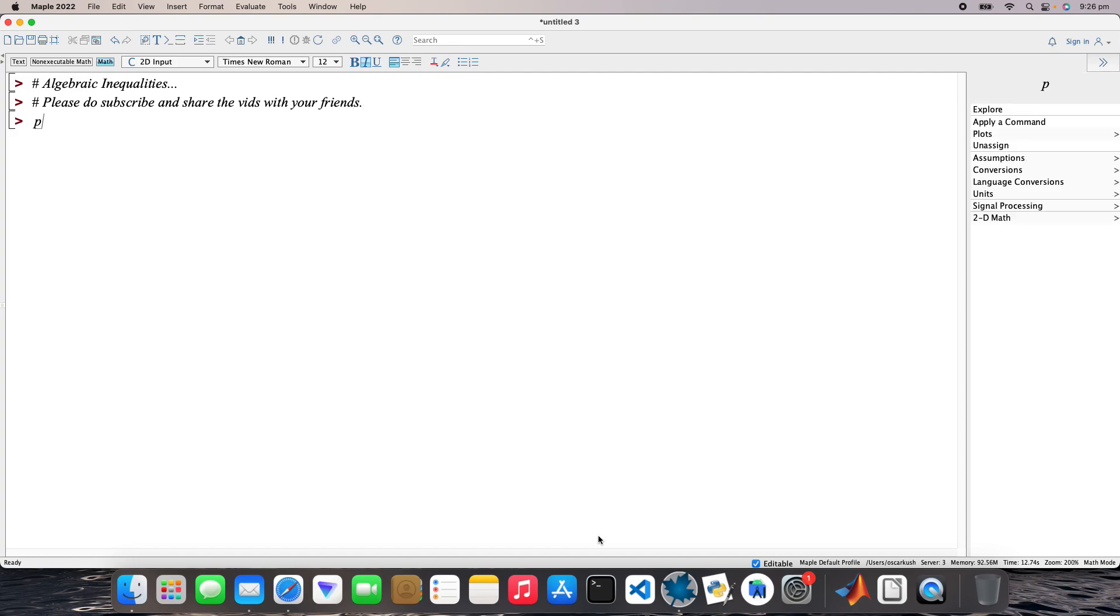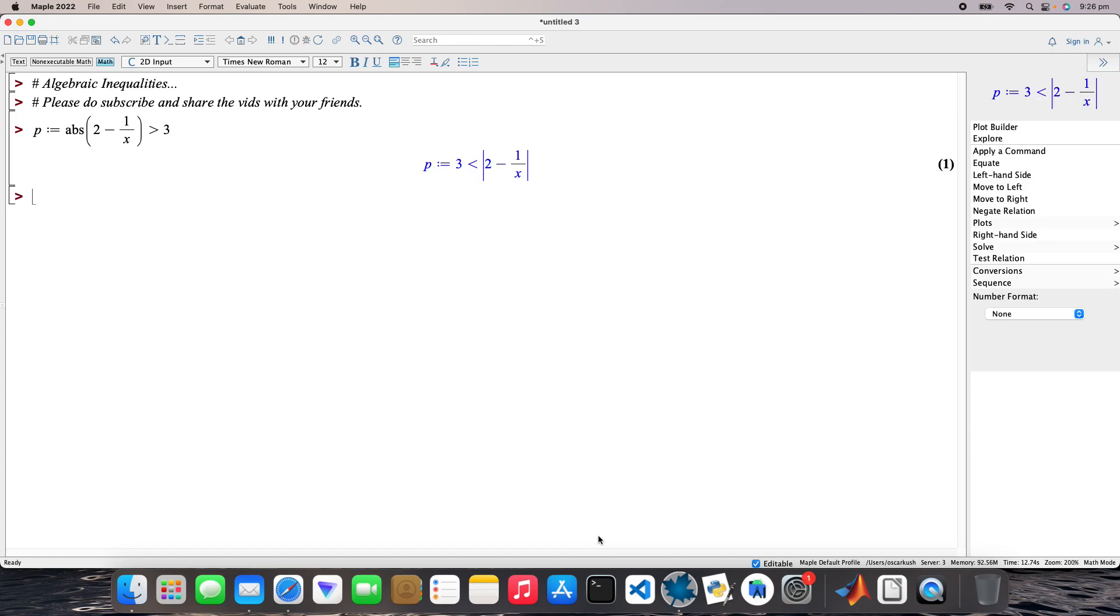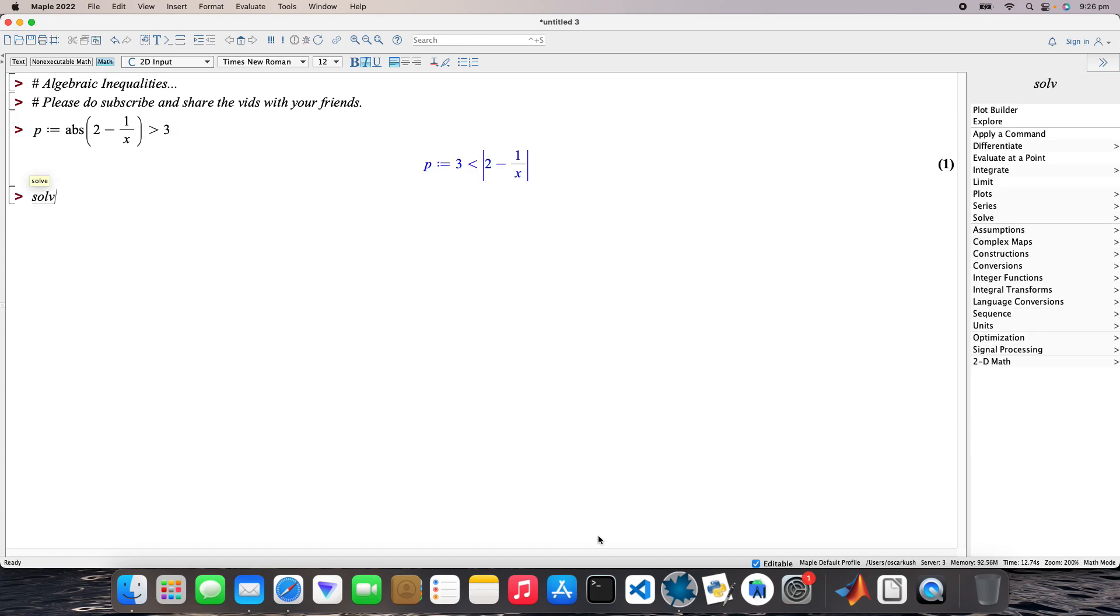So let's get started. I've got P as my first inequality, so absolute value of 2 minus 1 over x strictly greater than 3. Solve that P for x.